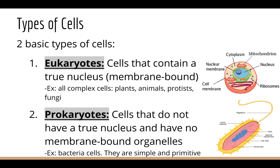There are two basic types of cells: eukaryotes and prokaryotes. Eukaryotes are cells that contain a true nucleus — a nucleus that's surrounded by a nuclear membrane. Examples of eukaryotic cells are all complex cells, including our cells, plant cells, animals, protists, and fungi. On the right you can see a picture showing the complex cells that eukaryotes have.